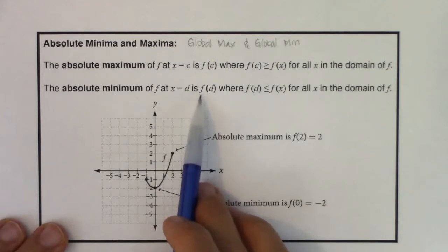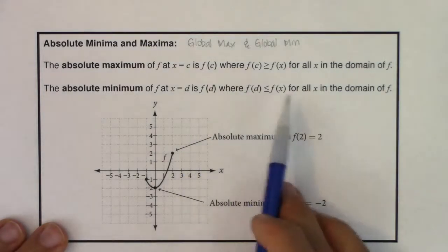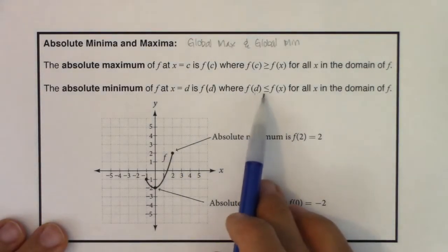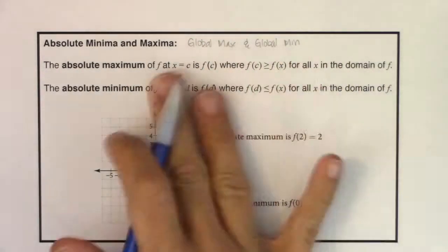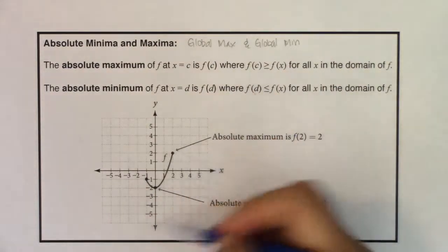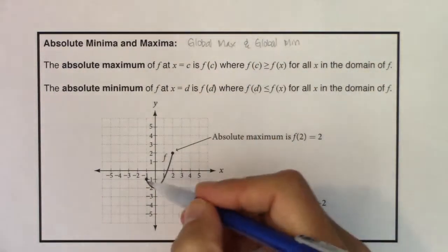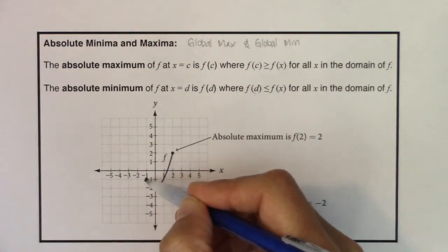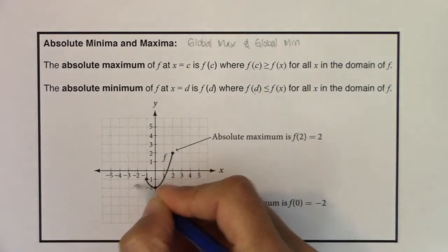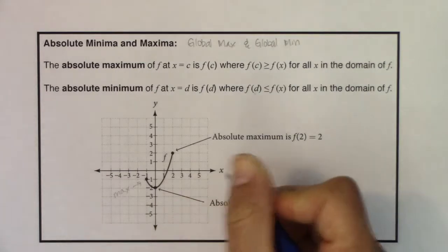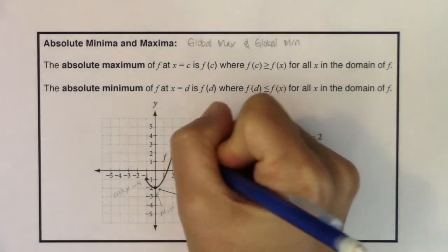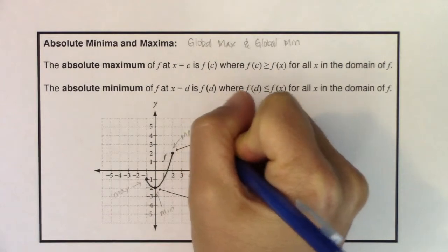The absolute minimum at d is the value f(d) where that y-value is smaller than every other y-value for every x in the domain of f. That might sound convoluted, so let's unpack it. Before getting into the definition, let's look at our graph. I've got a high point, a low point, and another high point, so I'm going to label a max, a min, and another max.